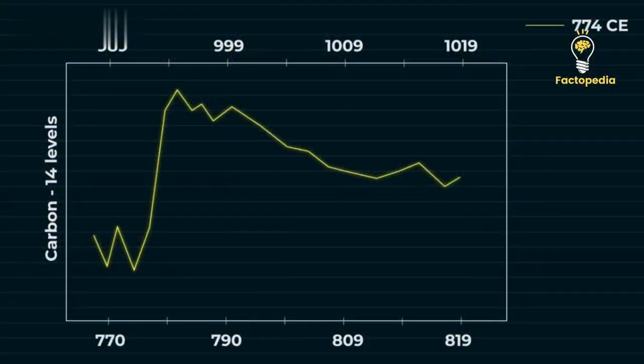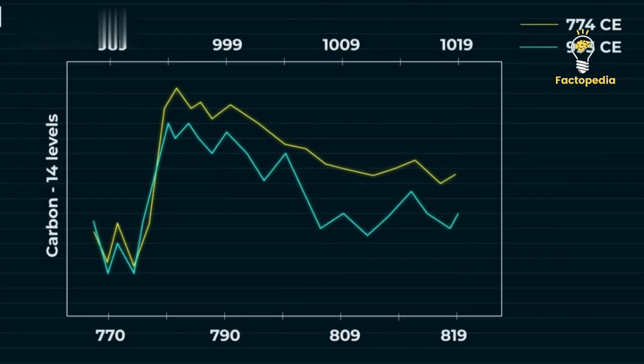In 2012, Japanese physicist F. Miyake stumbled upon an intriguing revelation. She unearthed an abrupt and single-year surge in radiocarbon concentration around the year 774 CE within Japanese cedar tree rings. This intriguing discovery was followed by another radiocarbon spike, noted in rings dating back to 993 CE in 2013.